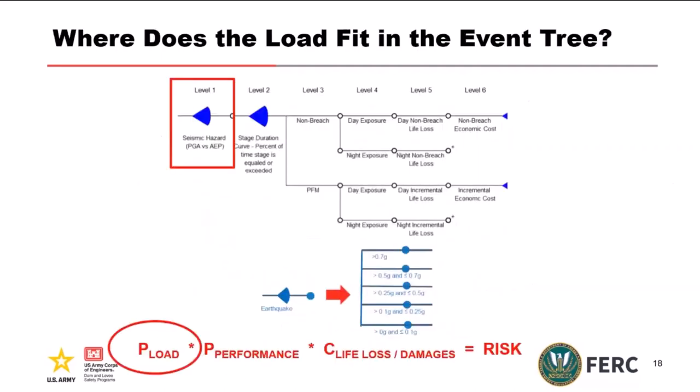Where does seismic loading fit in the event tree? Our loading is going to be up front. When looking at seismic failure modes, we're considering a coincident loading of the seismic event combined with the presence of the pool. To do that, we use the annual exceedance probability of the seismic event combined with the stage duration curve of the pool, which gives us the percent of time that the pool is at or above a certain elevation within a given year. A lot of times we see teams using both the annual exceedance probability of the seismic event and the annual exceedance probability of the pool, which drives down your coincident loading in a way that's not actually representative.